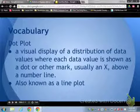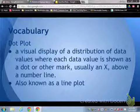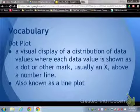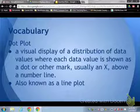First off, we need to start with the vocab of what is a dot plot. It is a visual display of a distribution of data values where each data value is shown as a dot or other mark, usually an X, above a number line. It's also known as a line plot.